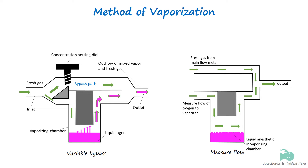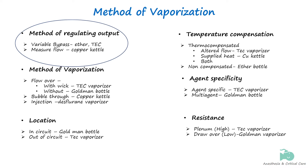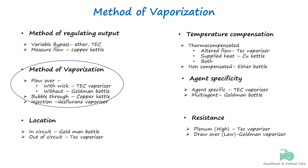In the previous video, we learned about how the high concentration of anesthetic agents in the vaporizing chamber is diluted with fresh gas to output a gas mixture that is safe for clinical use. In this video, we are going to discuss the method used to improve the efficiency of vaporization in the vaporizing chamber to ensure consistent vaporization and even mixing of the anesthetic and the carrier gas.